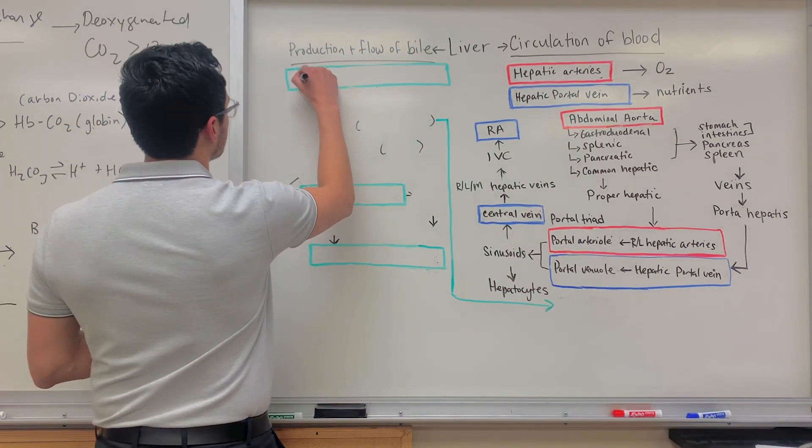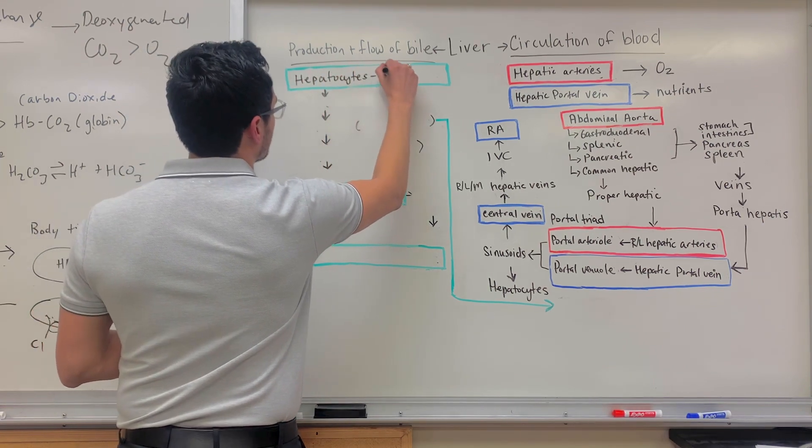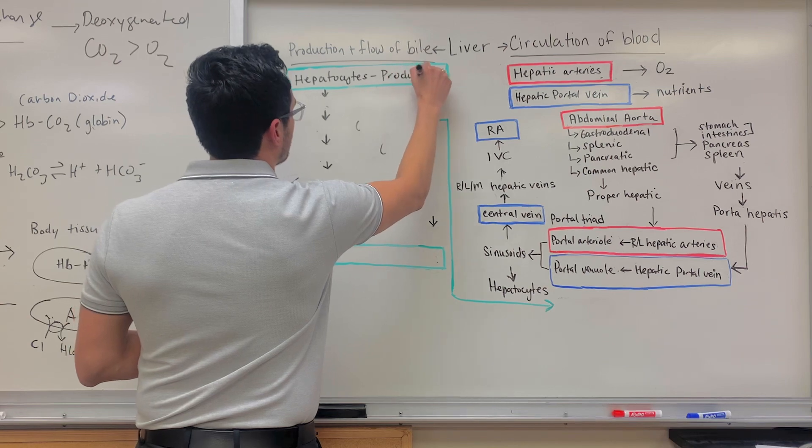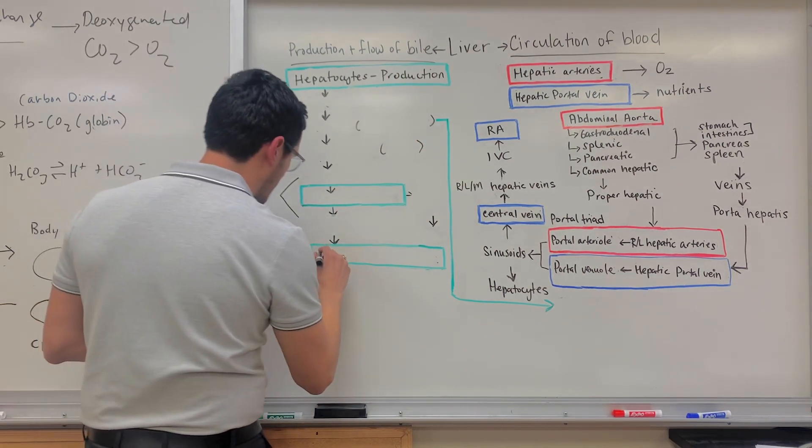Bile is produced by the hepatocytes, which are found within the liver. And bile is stored within the gallbladder.